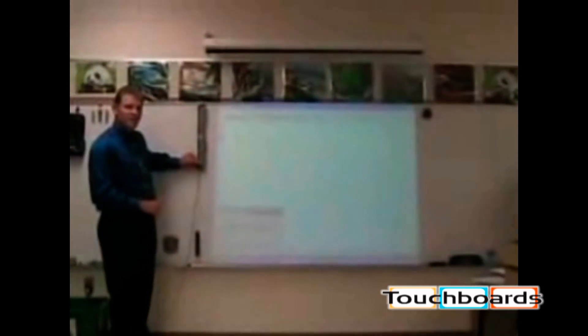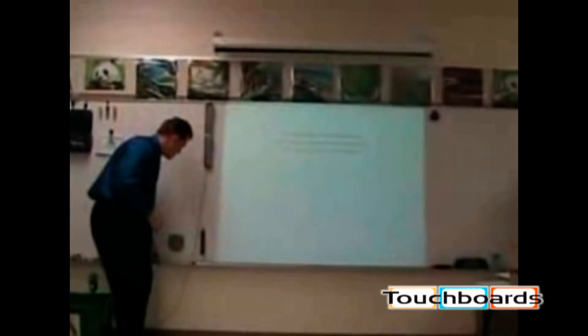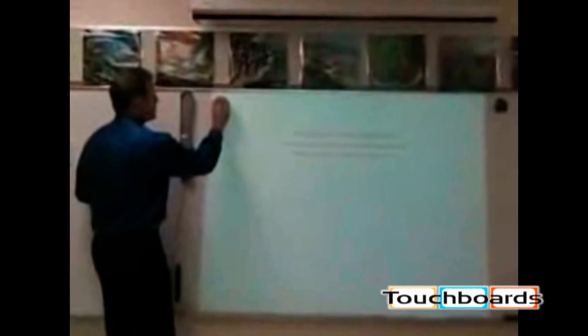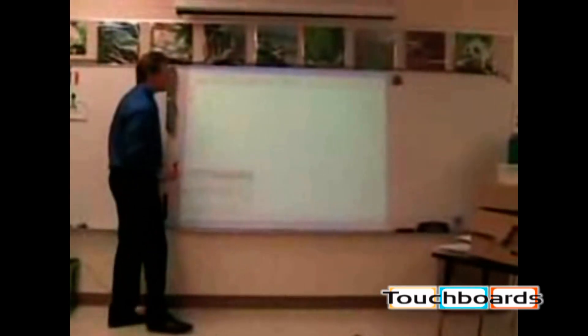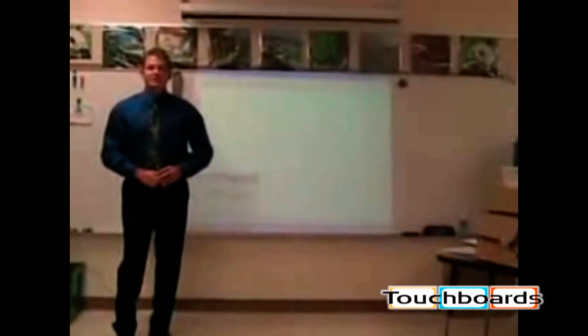Simply press the bottom button on the Mimeo bar and the calibration screen will appear. Touch in the center of the X, repeat this through all 9 X's on the board surface. The calibration screen will disappear and you'll be returned back to your computer screen.